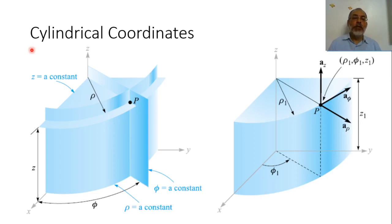For example, in the case of cylindrical waveguides, or in the case of any problem with cylindrical symmetry, it would be more appropriate to use cylindrical coordinates.